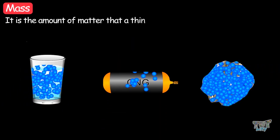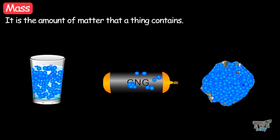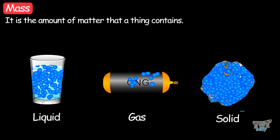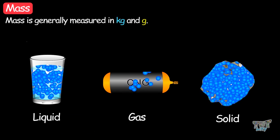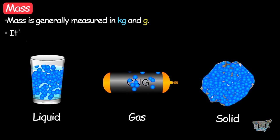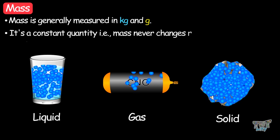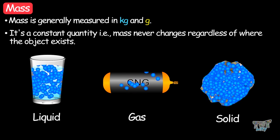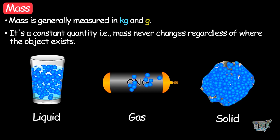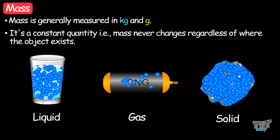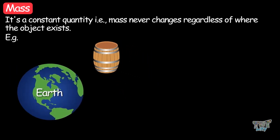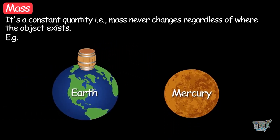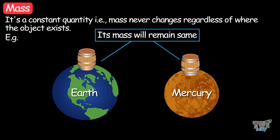Mass is the amount of matter that a thing contains, and a thing can be a liquid, gas, or solid. Mass is generally measured in kilograms and grams. It is a constant quantity — mass never changes regardless of where the object exists. For example, whether an object exists on any part of the earth or even on the moon or another planet, its mass will remain the same.